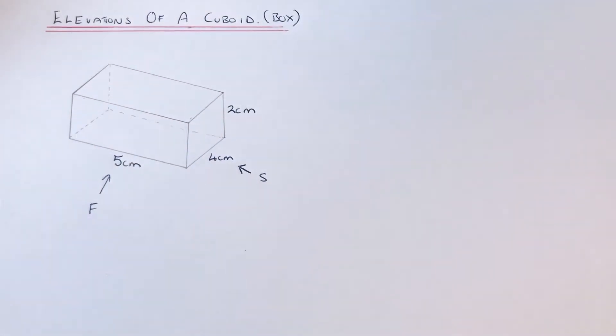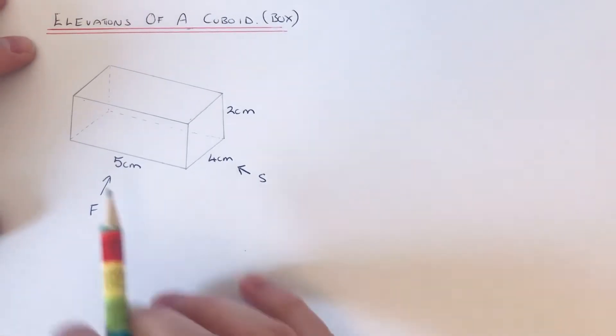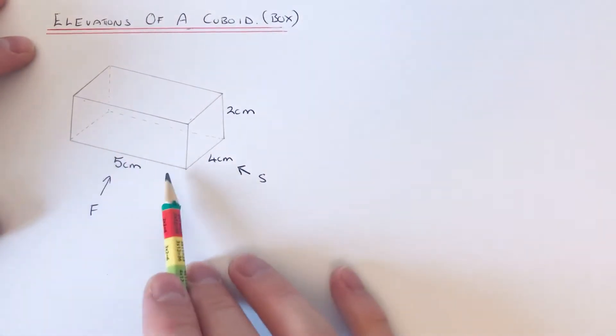Hi guys, welcome back. I'm going to show you how to draw the plan elevation, the side elevation, and the front elevation of a cuboid or a box. We've got this cuboid here which is five by four by two centimeters.